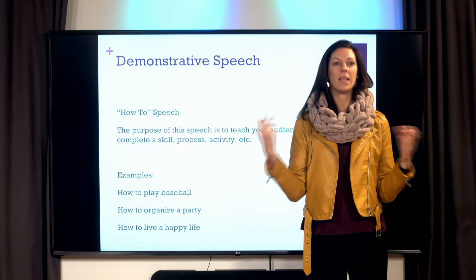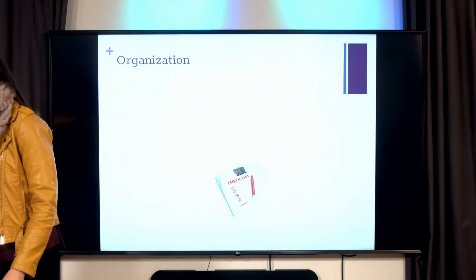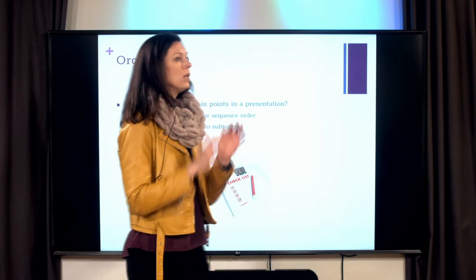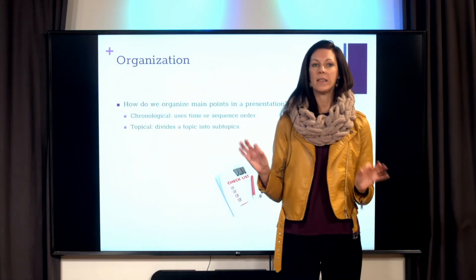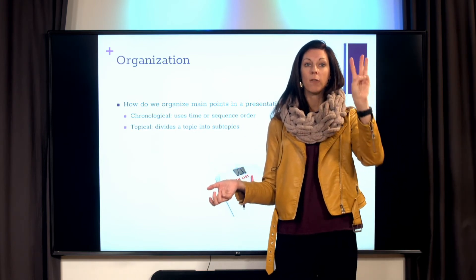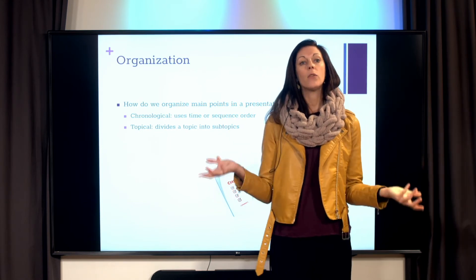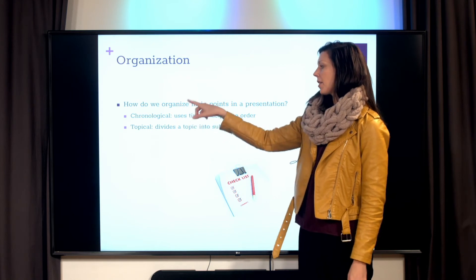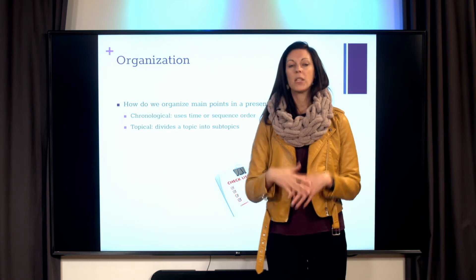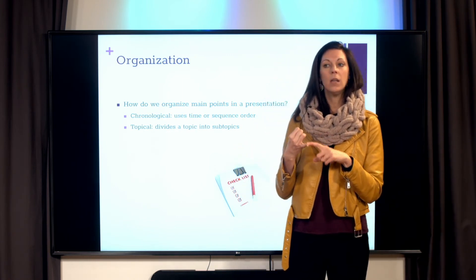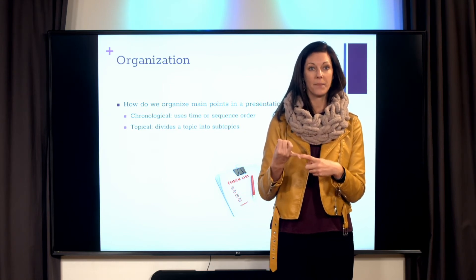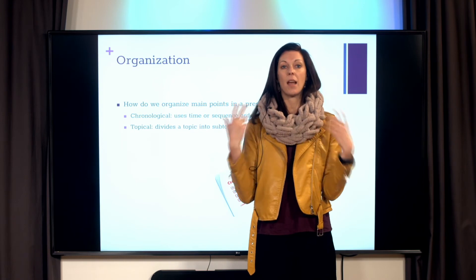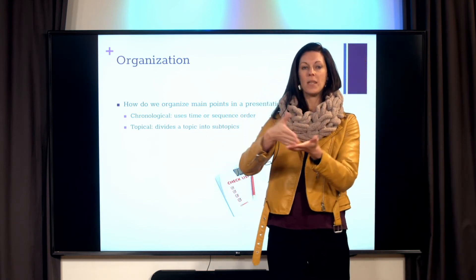When we think about organizing our topic, we're going to divide it into three or four basic steps called main points. We have two different options for organizing main points. One is chronological or sequence order — for example, if I was going to do how to bake a cake, main point one might be gathering the ingredients and materials, main point two might be mixing all the ingredients, and the third would be baking and frosting the cake. That would be sequence order because those steps have to be done in that specific order.